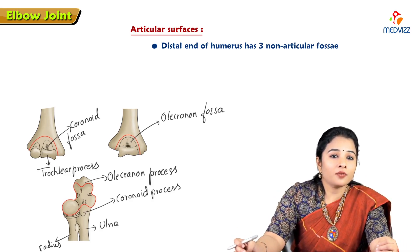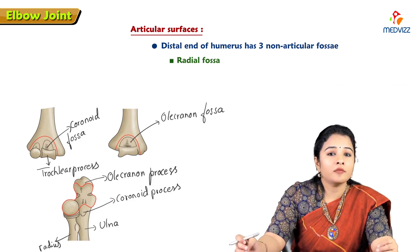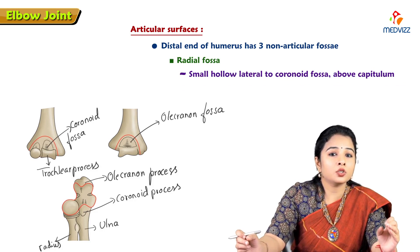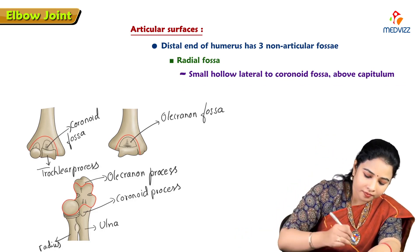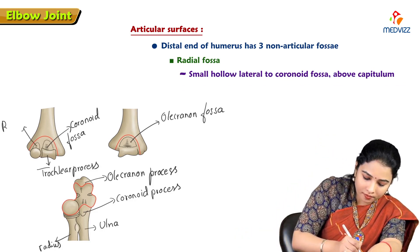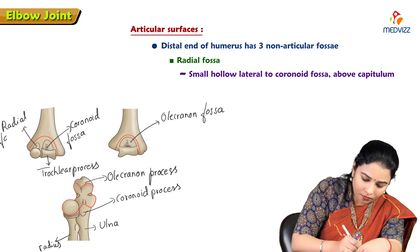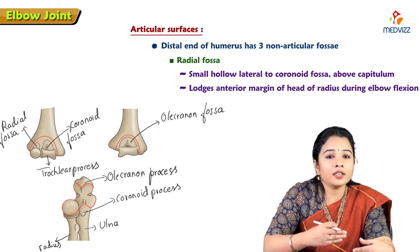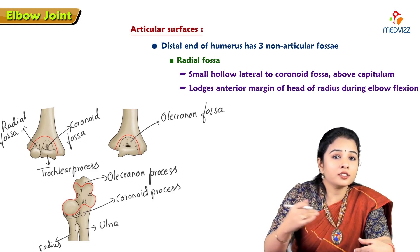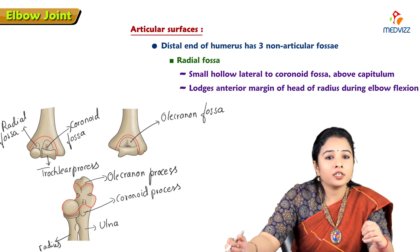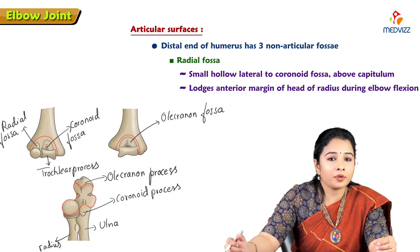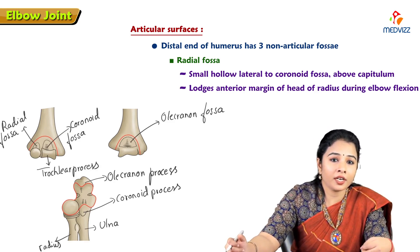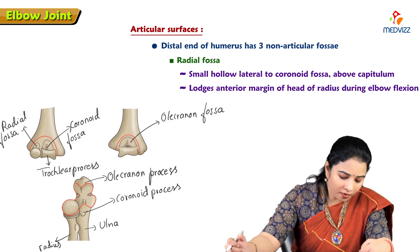The third fossa is the radial fossa, another small hollow present lateral to the coronoid fossa. As the name suggests, the head of the radius lodges into the radial fossa. It is present just above the capitulum and lodges the anterior margin of the head of the radius during flexion of the elbow.